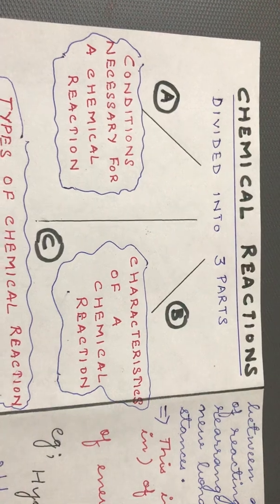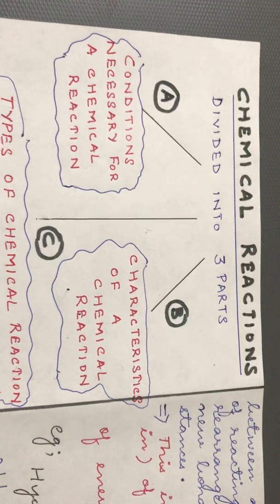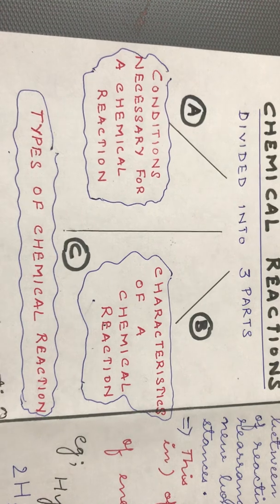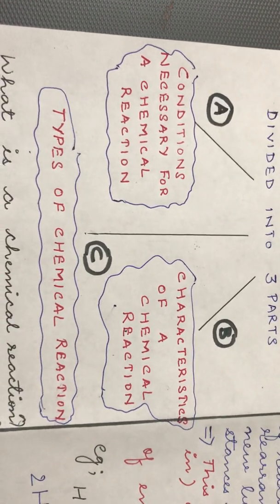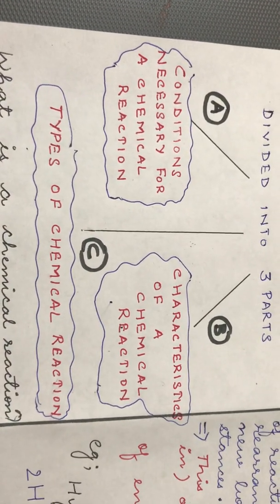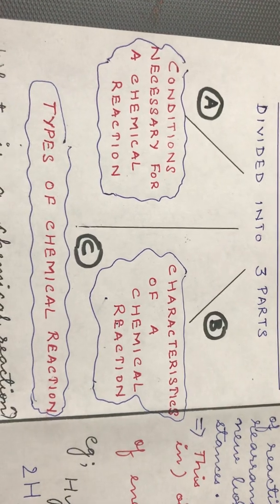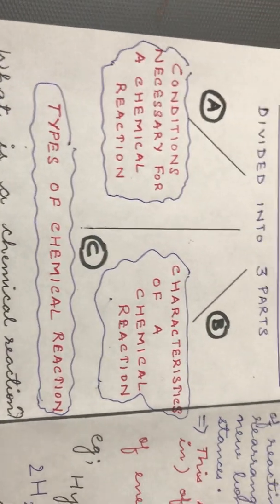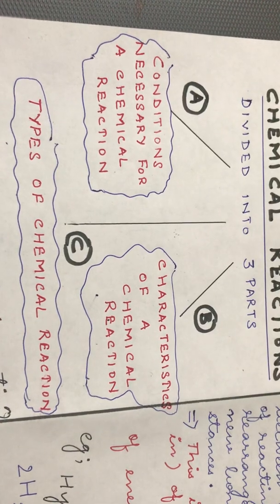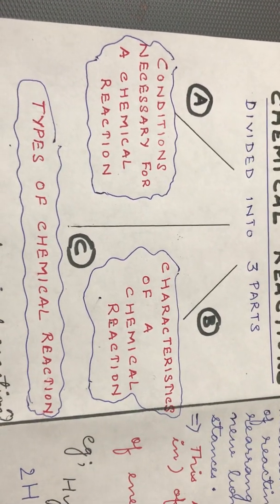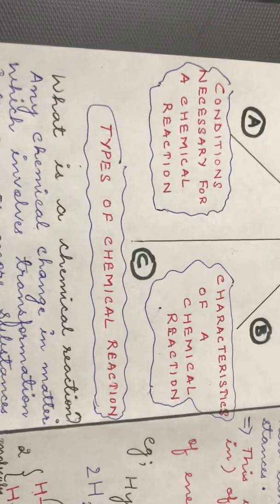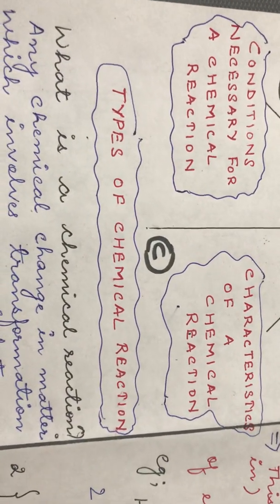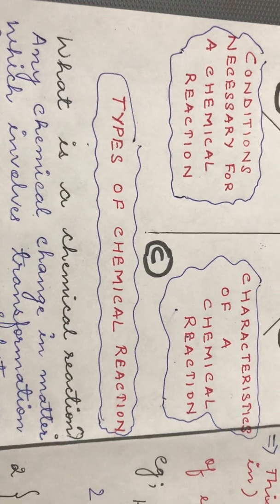To start with, we will be discussing the chapter on chemical reactions, which is divided into three parts. The first part contains conditions necessary for a chemical reaction, characteristics of a chemical reaction, and types of chemical reactions. The first two topics we have already covered in class 7th. The third topic — types of chemical reactions — is what we will be studying in detail in class 8th.